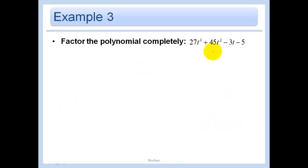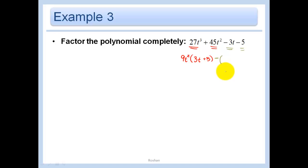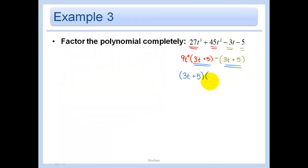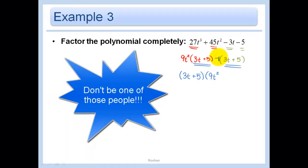This next one is a factor by grouping question. In the first two terms I have 9t² in common: 27t³ ÷ 9t² = 3t, plus 45 ÷ 9 = 5. In the last two terms I factor out the negative, and I'm left with (3t + 5) as well. Conveniently, (3t + 5) is in common. Now look carefully — you obviously have 9t² left, but don't forget the silent '1' that's there. Minus 1. Don't be one of those people who forgets it.